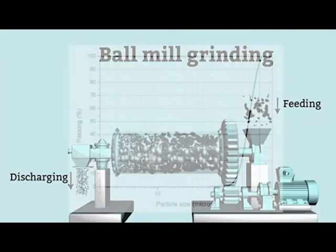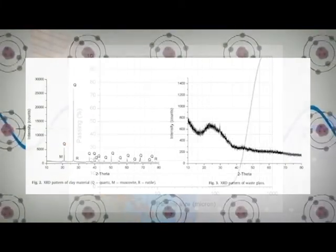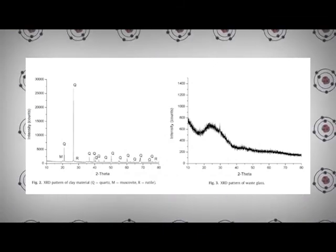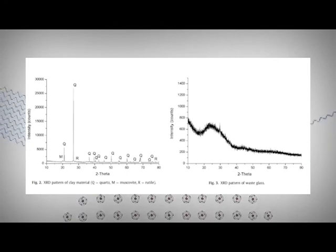Next, the waste glass was first crushed for one hour using a ball mill. Particle size distribution test was carried out for waste glass using sieve analysis. And finally, the mineralogical composition of clay and waste glass were achieved using X-ray diffraction technique.